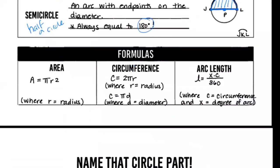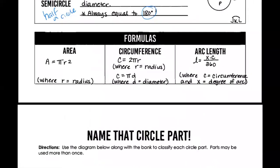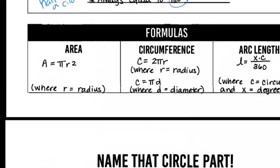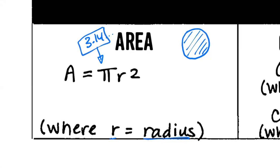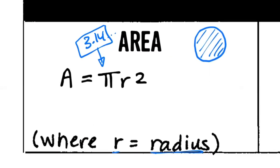Now let's go on to the formulas. Area of a circle means how much space is inside. The formula is: Area = π r². We need the radius for this. And remember what π is — it goes on forever, but we use 3.14. So to find how much stuff is inside a circle, you need the length of the radius and you apply π r².